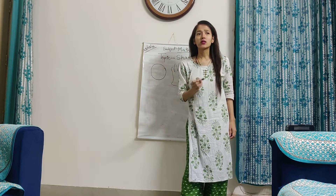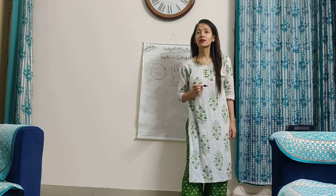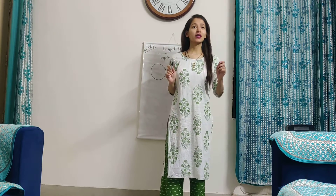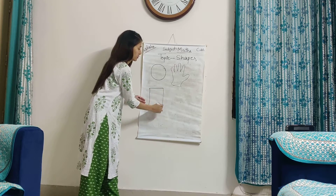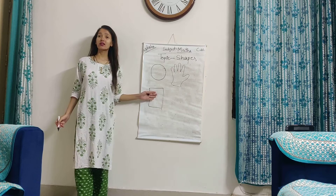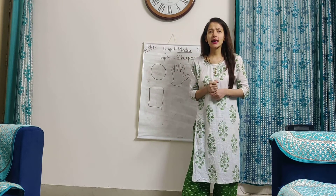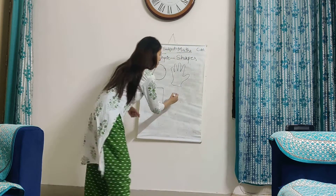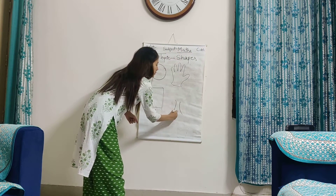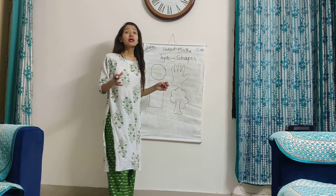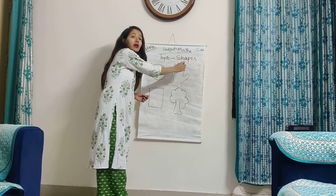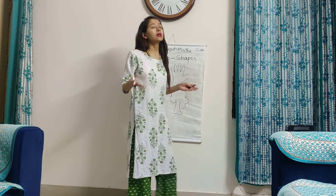Now, can anyone tell me what is the shape of your notebook? Who will come here to draw the shape of your Maths notebook? Shubham, you come here. So this is the shape of your Maths notebook. Very good, Shubham. If I say what is the shape of a tree? This is the shape of a tree. So basically the outer boundary of an object is nothing but its shape.